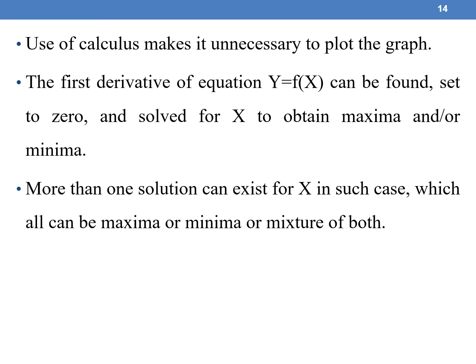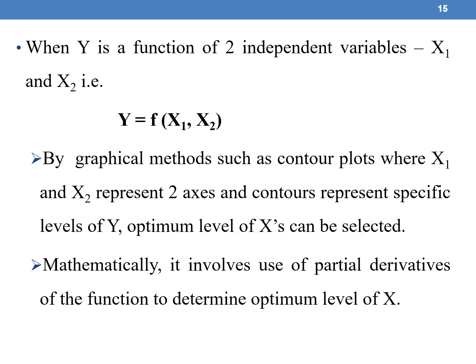Use of calculus makes it unnecessary to plot the graph. The first derivative of y = f(x) can be found, set to zero, and solved for x to obtain the maximum or minimum. When y is a function of two independent variables x1 and x2, graphical methods such as contour plots — where x1 and x2 represent two axes and contours represent specific levels of y — can be used to select the optimum levels of x1 and x2. Mathematically, this involves partial derivatives of the function to determine the optimum level.